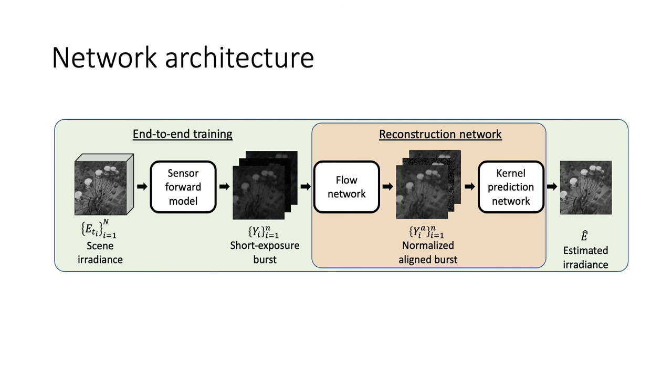At train time, we generate a burst from a video representing the scene's irradiance values. We implement this using a novel network layer named the sensor-forward model, which numerically models the frame acquisition process and encapsulates user-controlled camera parameters. Training this pipeline in an end-to-end manner enables the reconstruction network to tailor its weights according to each frame's chosen exposure and corresponding degradation level.